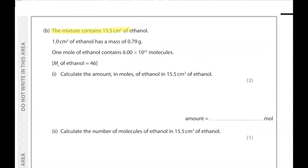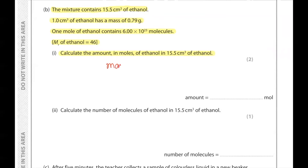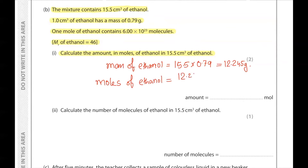Part B. The mixture contains 15.5 cm³ of ethanol. One cm³ of ethanol has a mass of 0.79 g. The Mr of ethanol is 46. Calculate the amount in moles of ethanol in 15.5 cm³. Mass of ethanol = 15.5 × 0.79 = 12.245 g. Moles of ethanol = 12.245 ÷ 46 = 0.266 mol.